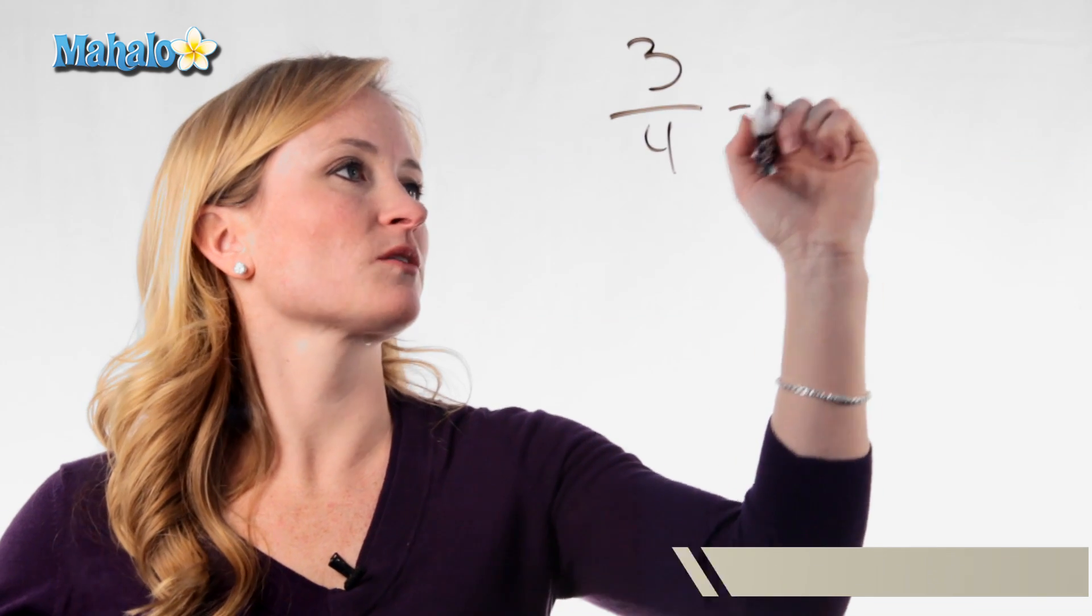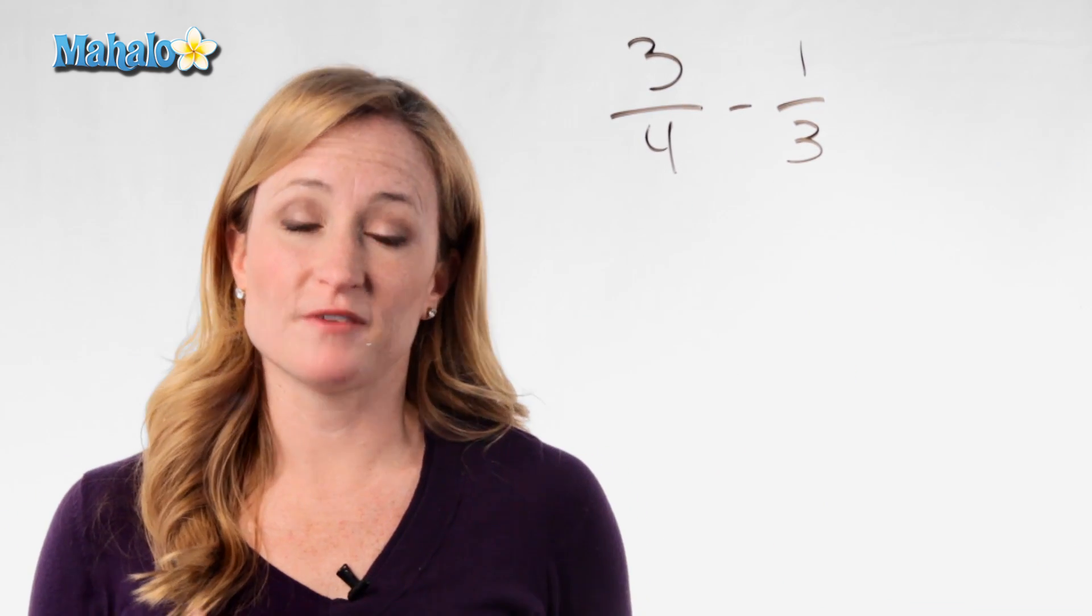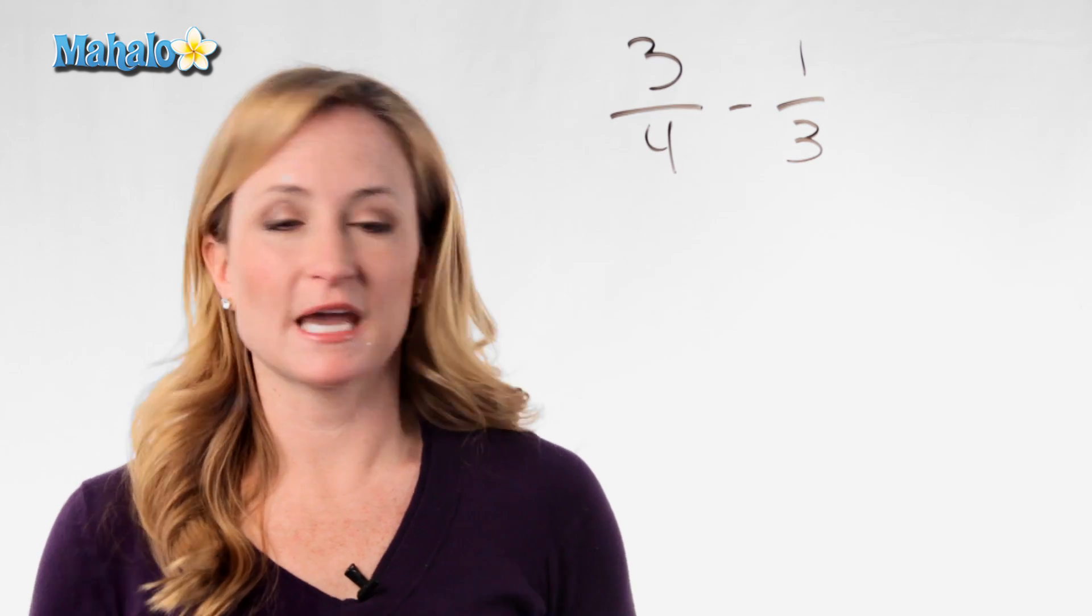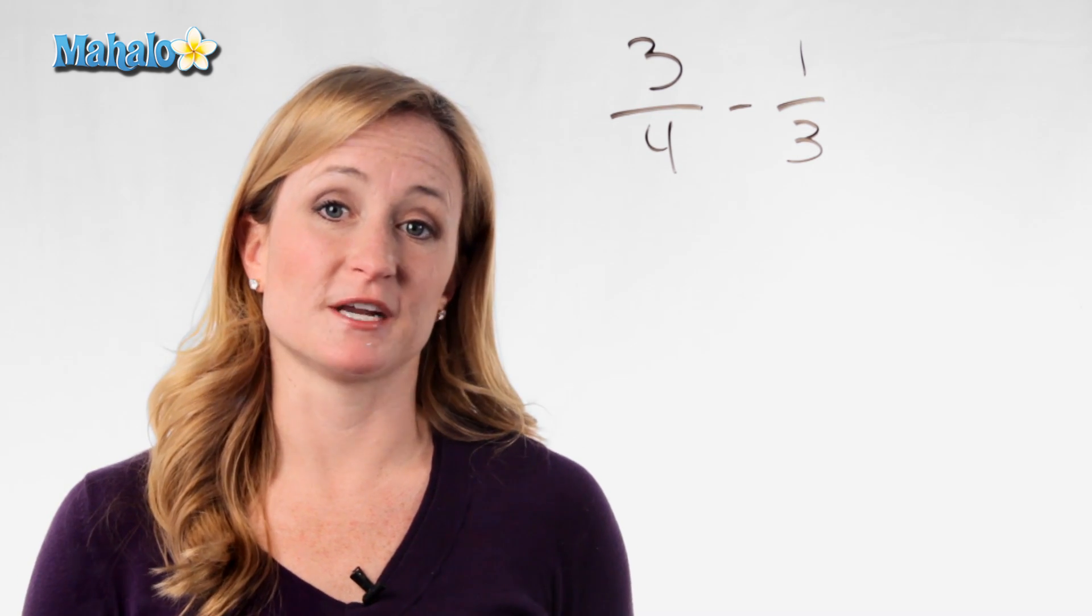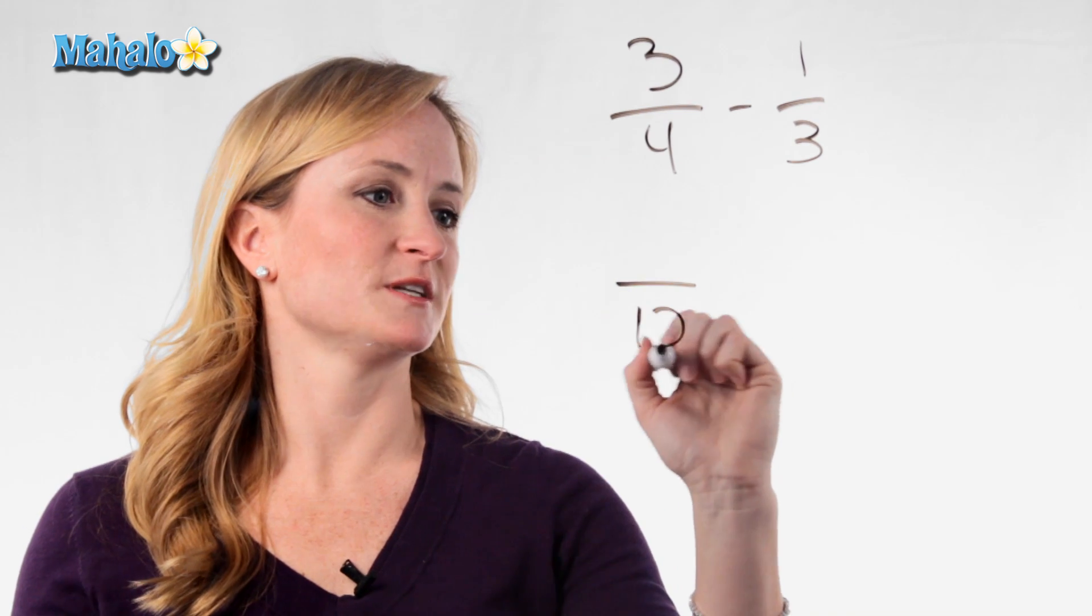Start with a simple problem like 3 fourths minus 1 third. Now again, the rule of adding and subtracting fractions: you can't add or subtract them unless you have a common denominator. So you need to first find your common denominator, which in this case would be 12.